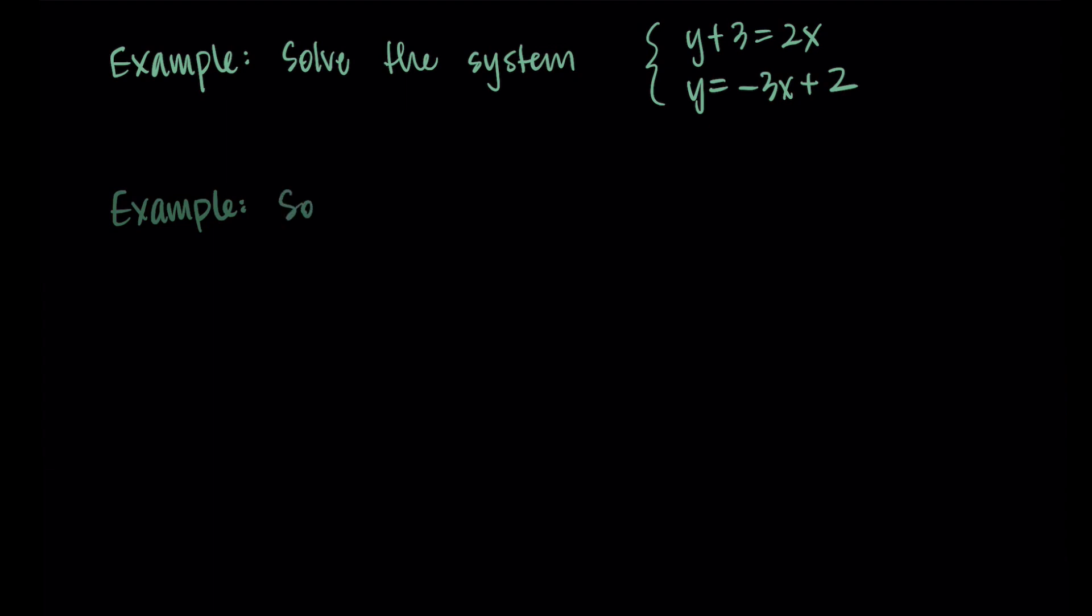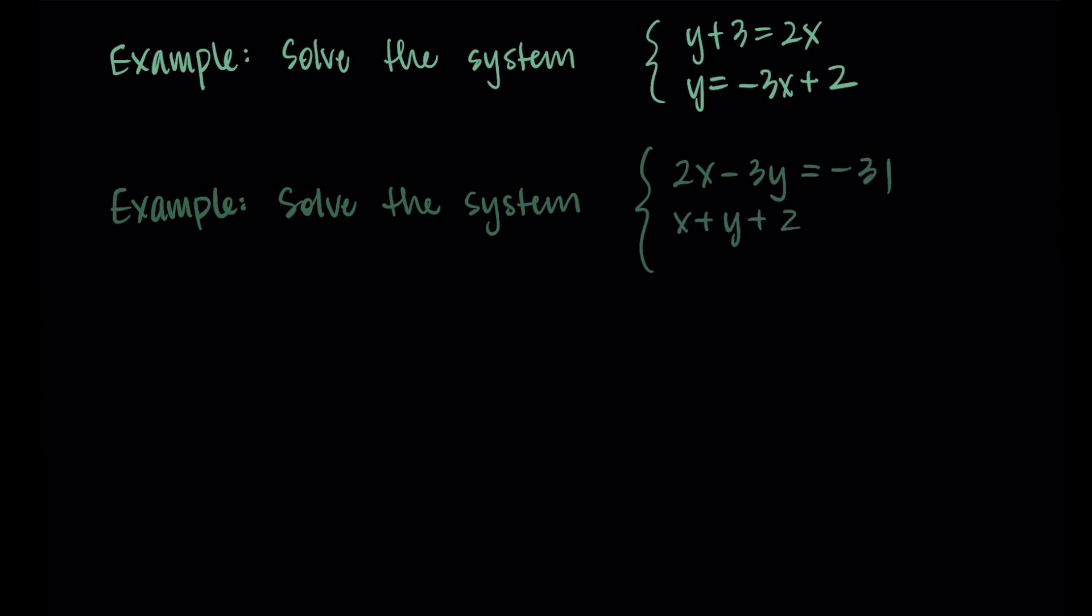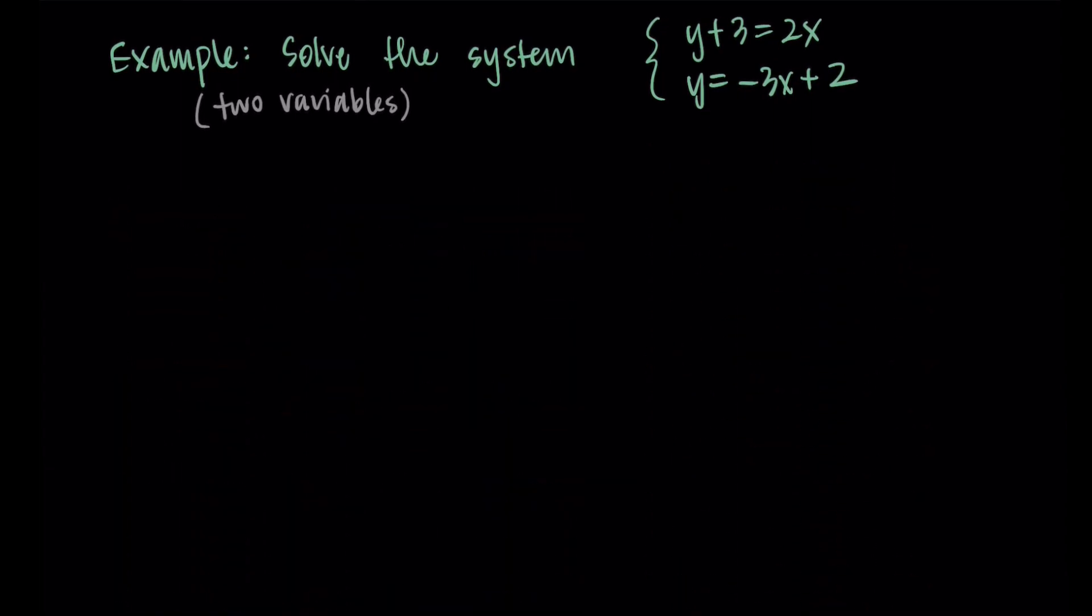We'll also do a three variable version. We could solve the system: two X minus three Y equals negative 31, X plus Y plus Z minus 14 equals zero, and four Y equals 16 plus Z. When we're asked to solve them, we're trying to find the X and Y values, or the variable inputs that make both equalities true, or in the three dimensional case, all three equalities true. We're trying to find the solution that makes the whole system true all the time.